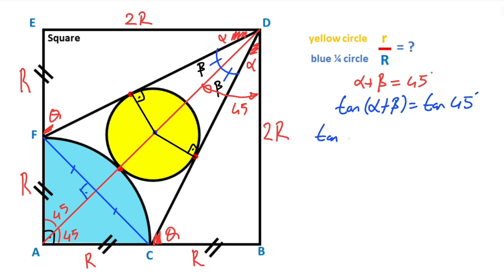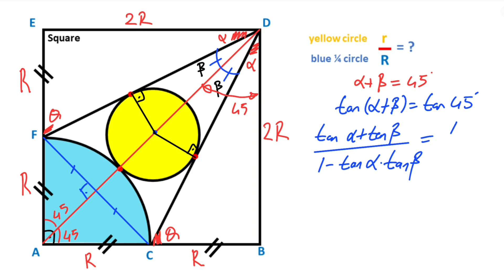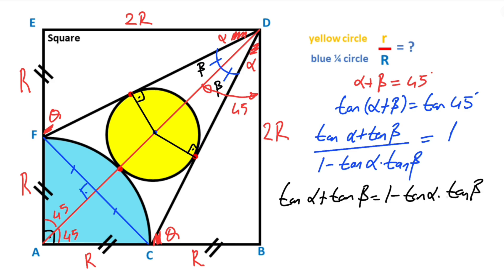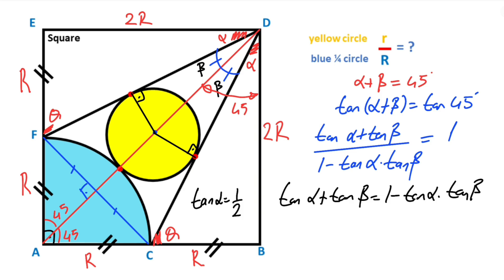We know the expansion of tangent(alpha + beta) equals (tan α + tan β) / (1 − tan α · tan β), which equals 1, because tangent(45°) = 1. Therefore tan α + tan β = 1 − tan α · tan β. If you focus on the triangle, tangent alpha equals one half.